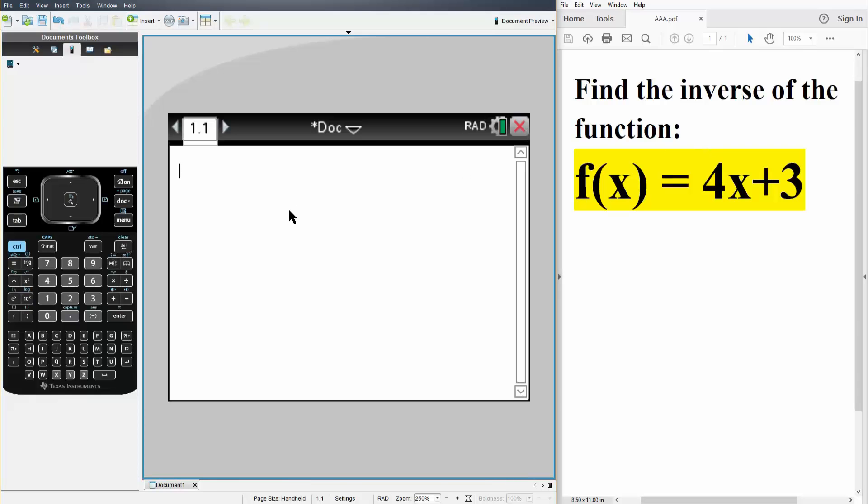First, we will define f(x). We hit control, this icon right here, and we write what we have: 4 times x plus 3. We hit enter, and now f(x) is defined.